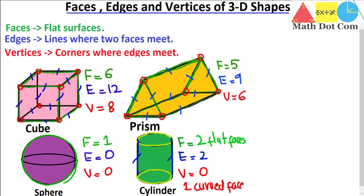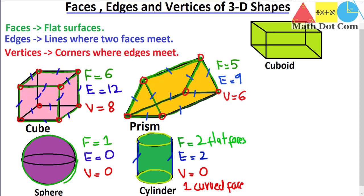The next shape is the cuboid. A cuboid differs from a cube in that all its faces are rectangular in shape. It has the same number of faces as a cube — six faces. The edges are also the same: one, two, three, four, five, six, seven, eight, nine, ten, eleven, twelve — that's 12 edges. And it has the same eight vertices. So cube and cuboid are exactly the same in terms of faces, edges, and vertices.